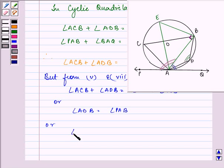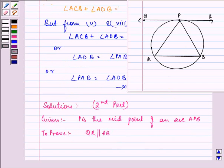In other words, we can say that angle PAB is equal to angle ADB. And this is the required proof of the theorem which was given to us. This completes the first part of the solution. Now, let's proceed with the second part.